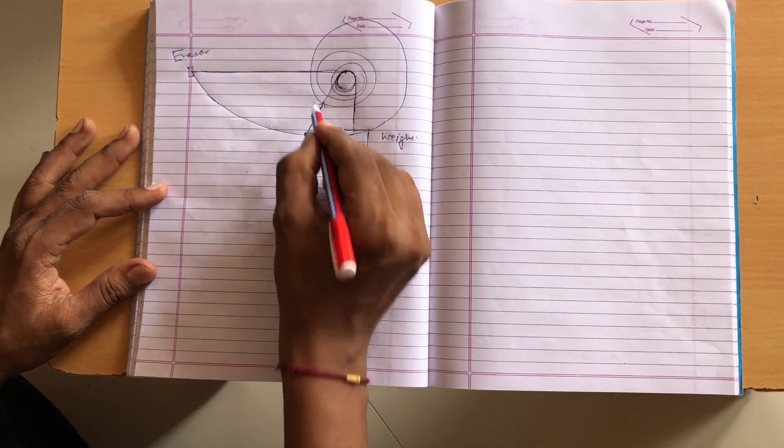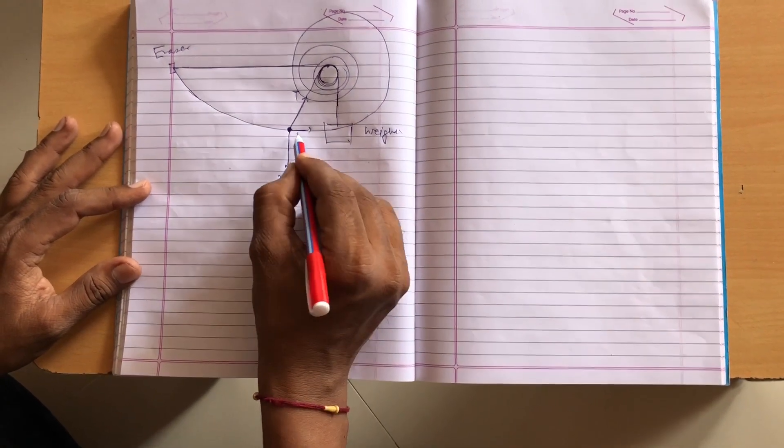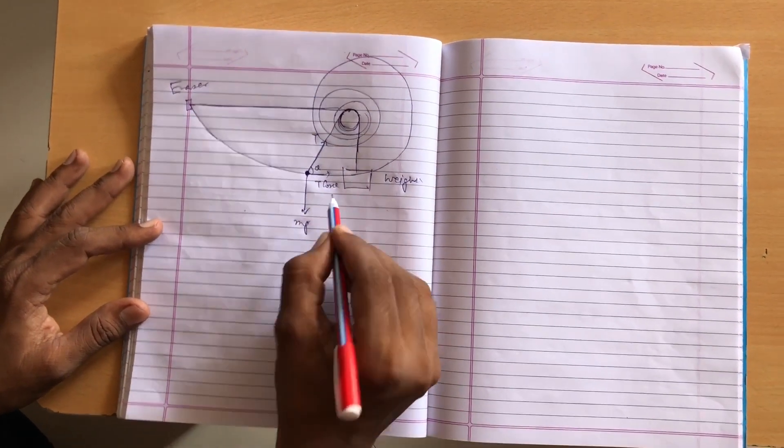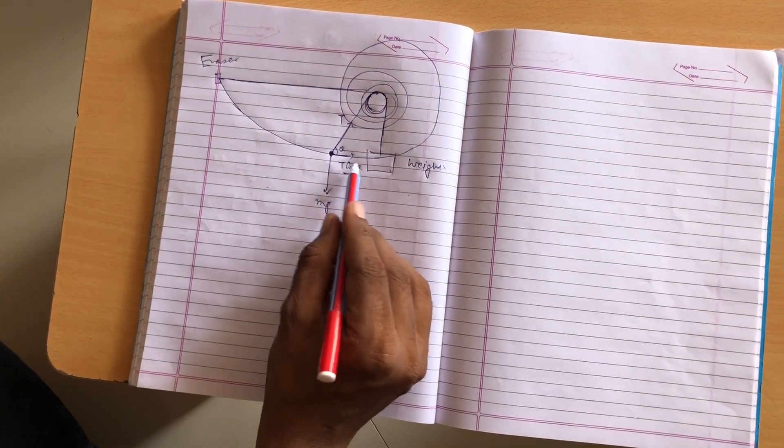The component of tension along this, say this one T cos theta, it is responsible for increasing in velocity.